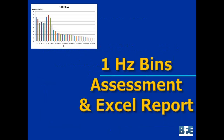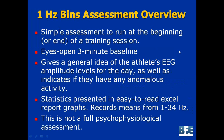We're going to start now with the software, beginning with the smallest aspect: the one-hertz bins assessment and Excel report. As I said earlier, there is no big psychophysiological assessment in the suite. This one-hertz bins assessment only records data from the one EEG sensor, and it's meant as a simple assessment to run at the beginning or end of a training session — think of it as a baseline measurement. It's eyes open, lasts only three minutes, and gives you a general idea of the athlete's EEG amplitude levels for the day, as well as an indication of any anomalous or unusual activity that might be a flag.